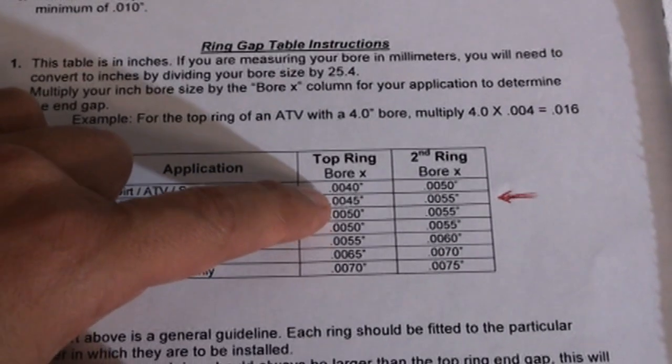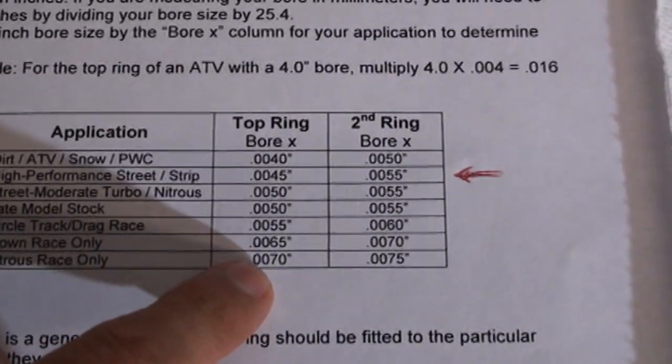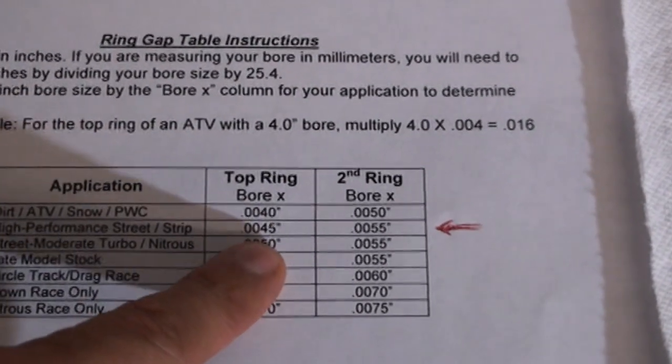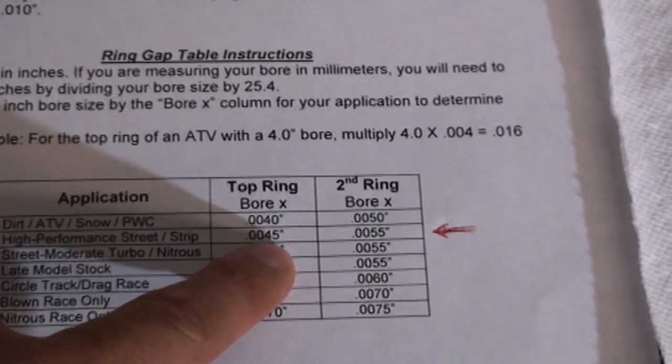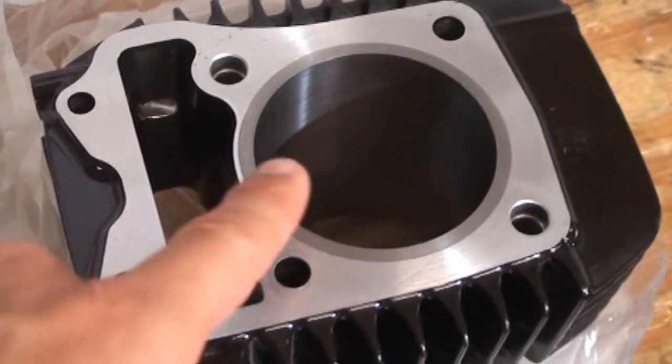So if your cylinder bore, meaning the distance from this side to this side, was one inch, then this chart would be exactly what you use. So your ring gap would be .0045. That's if your cylinder bore was one inch. Our cylinder bore is two and a half inches across.